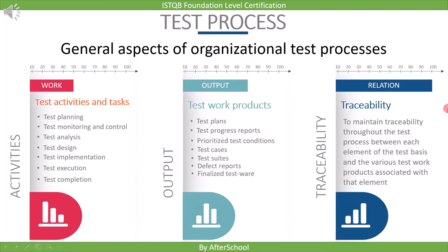Now let's see the definition: to maintain traceability throughout the test process between each element of the test basis and the various test work products associated with that element. Traceability is linking between requirement, test condition, test case, and report. So just remember: the three aspects of organizational test process are test activity and task, test work product, and traceability.